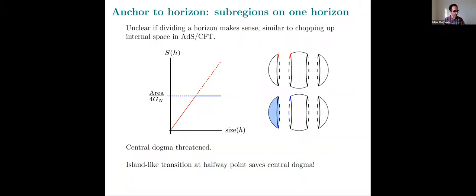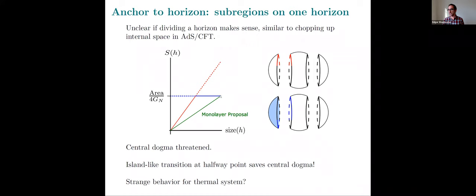I like to think about this as analogous to the island transition in the case of black holes. The physics may not be related, but: you come very close to violating the bound from the central dogma, there's a transition at an order-one fraction of the system size — here exactly half — where a new saddle appears, and the entanglement wedge now includes the entire interior whereas before it didn't include any of the interior. In contrast, the monolayer proposal gives a thermal-looking curve: it just linearly increases and saturates once you consider the entire system. The entropy is just A over 4G times whatever fraction of the horizon you've chosen — an ordinary thermal curve. This distinguishes the two proposals.